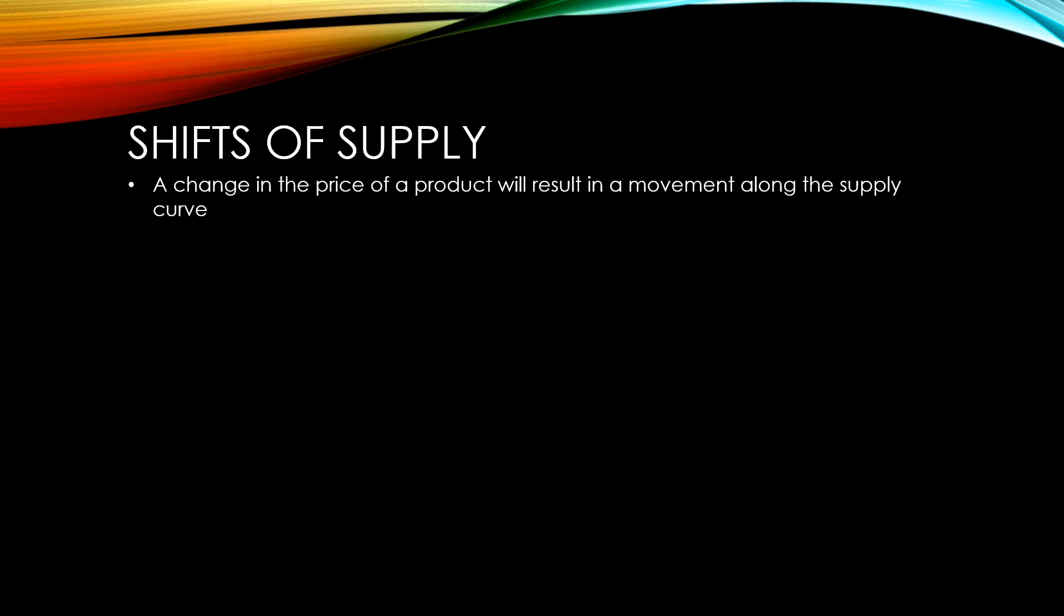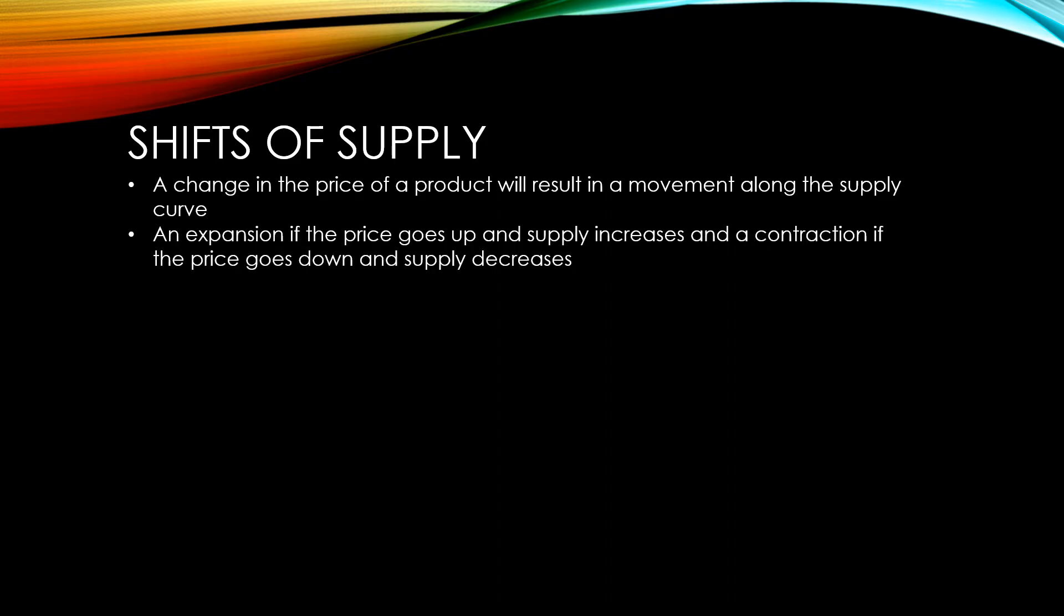So to recap, a change in the price of a product will result in a movement along the supply curve. An expansion if the price goes up and supply increases, and a contraction if the price goes down and supply decreases.